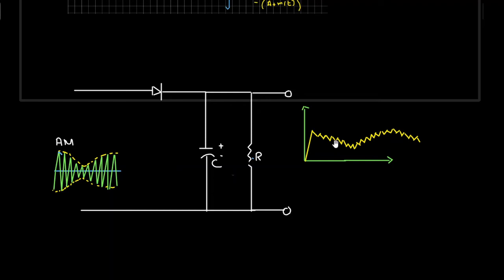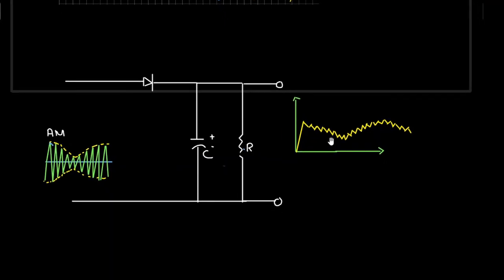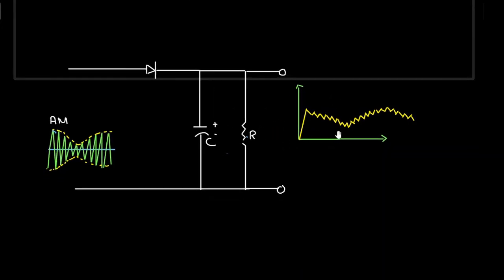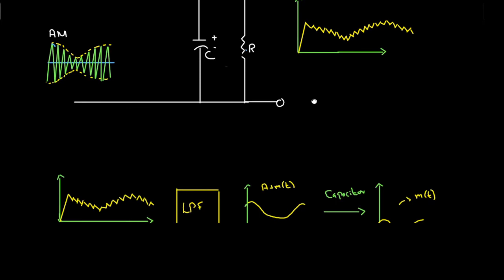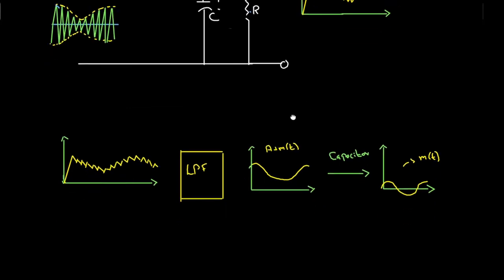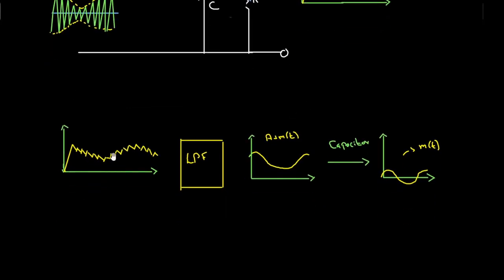This charging and discharging process continues, and as a result the output of this circuit is a waveform that follows the envelope. This is the output waveform across the capacitor. This signal has ripples, so to remove the ripples we are going to use a low pass filter.